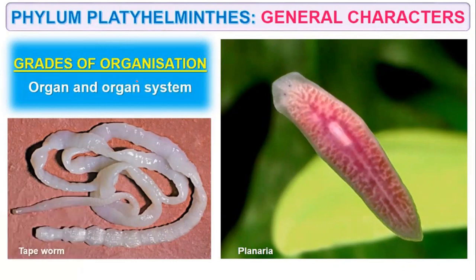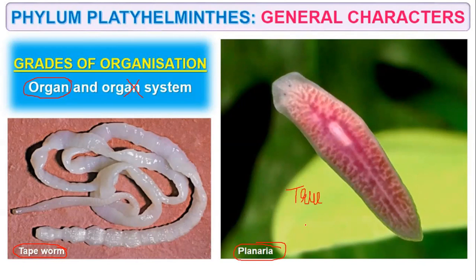In very rare cases the term organ system level is used, but generally we use organ level of organization. So if a question comes asking the level of organization in Platyhelminthus, the answer is organ level of organization. Examples include tapeworm, which resides inside our intestine, planaria, which has the property of true regeneration, and liver fluke.